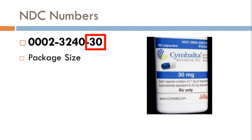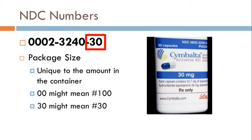The last portion is the package size. For this bottle of Cymbalta shown here, it's 30 capsules, so the last section is 30. If it was 100 capsules, it might end in 00. And if it was 60 capsules, it would probably show 60 as the last two digits.